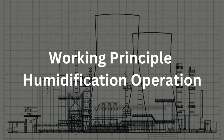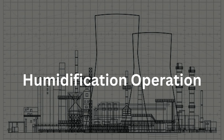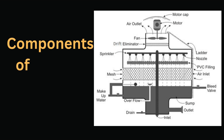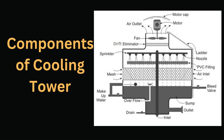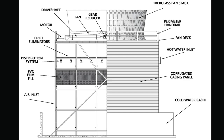Mass transfer is only feasible when the gas is unsaturated with vapor. The major components of the cooling tower are: frame and casing, fill (splash or film type), cold water basin, drift eliminator, nozzles, and fans.